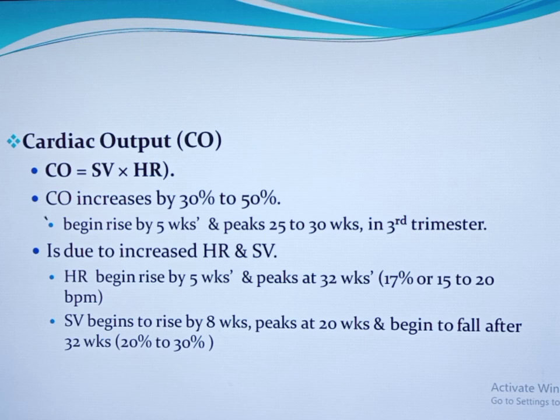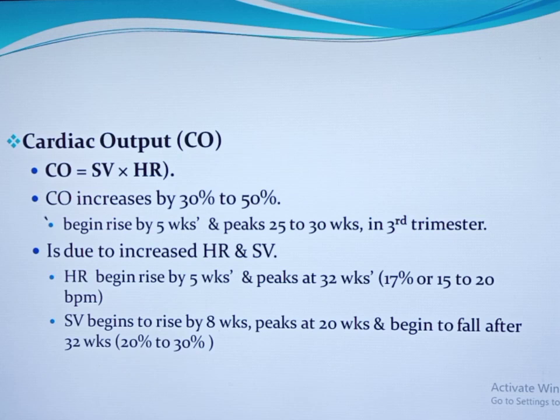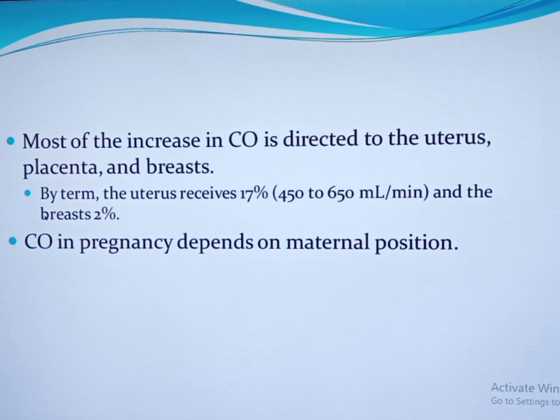This increased cardiac output is due to increment of both heart rate and stroke volume. Heart rate increases by around 17 percent, roughly 10 to 20 beats per minute. It starts to rise by five weeks of gestation and peaks at 32 weeks. Stroke volume also increases, beginning to rise by eight weeks, peaking at 20 weeks of gestation, and falling starting from 32 weeks. The overall increment of stroke volume is 20 to 30 percent. Most of the increase in cardiac output is directed to the uterus, placenta, and breasts.